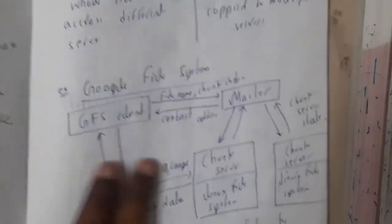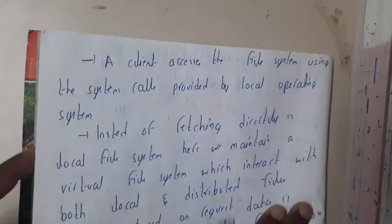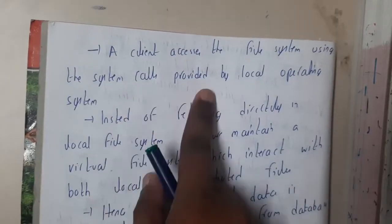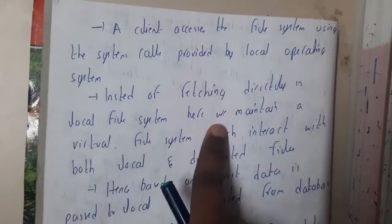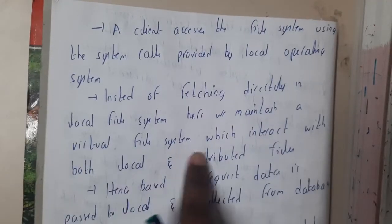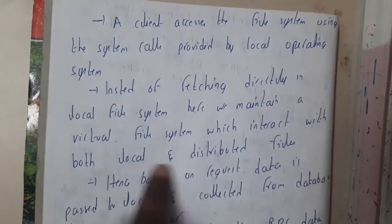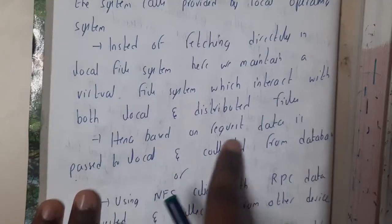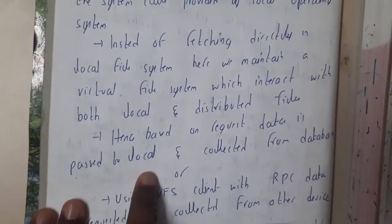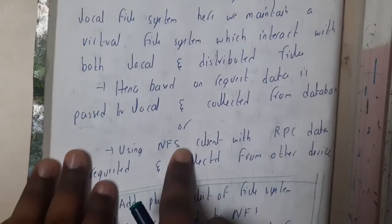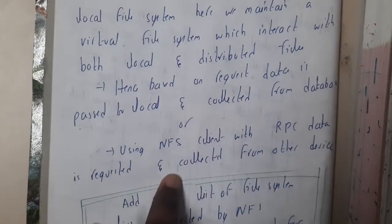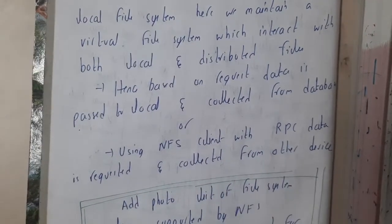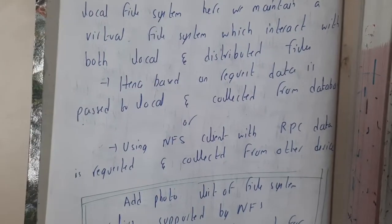A client accesses the file system using system calls provided by the local operating system. Instead of fetching directly from local storage, a Virtual File System layer is maintained which interacts with both the local and distributed file system. Based on the request, data is either passed to local storage or, using the NFS client with RPC, data is requested and collected from other devices.